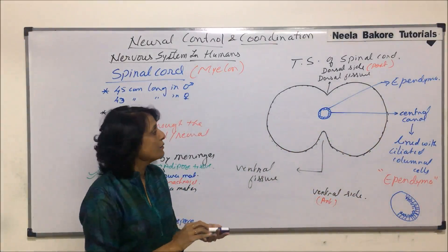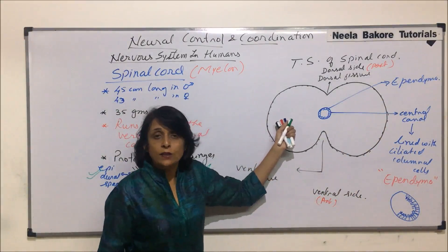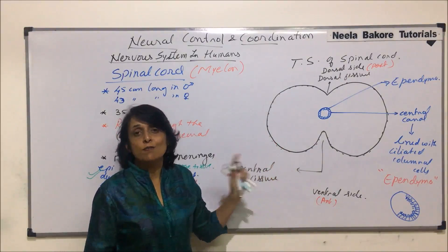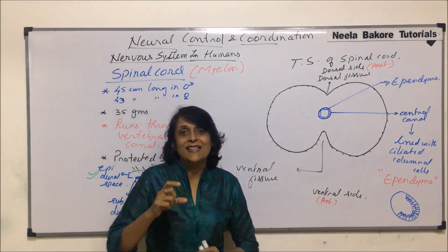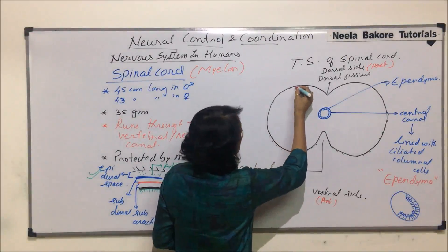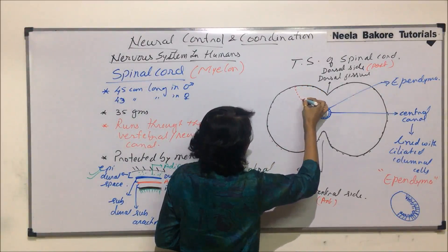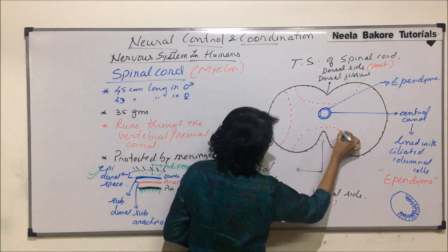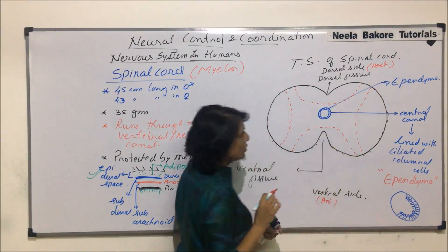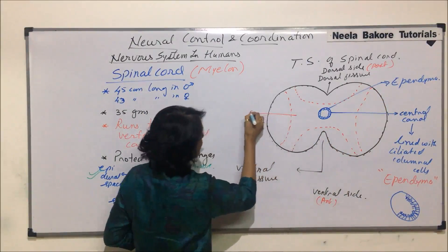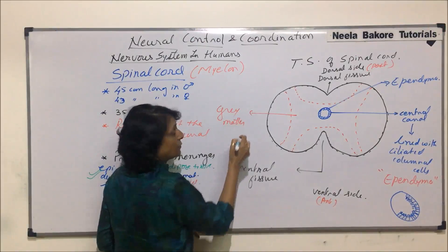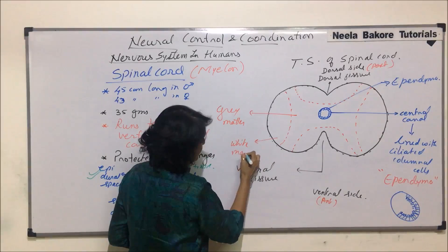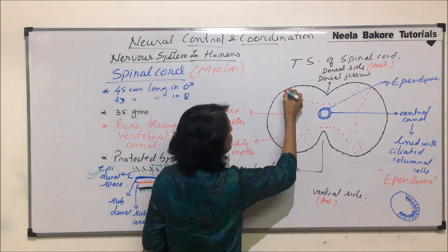In the spinal cord, the inner part is gray matter and the outer part is white matter. The gray matter in the case of the spinal cord is arranged in the shape of the alphabet H, also known as butterfly shape. This butterfly or H-shape extends into the white matter. The inner one is gray matter and the outer one is white matter.